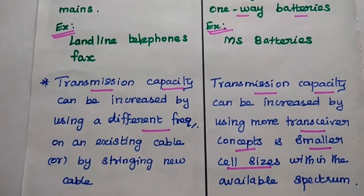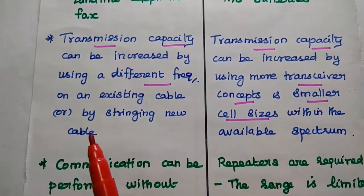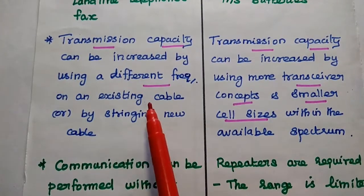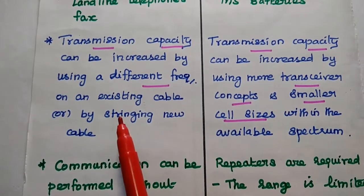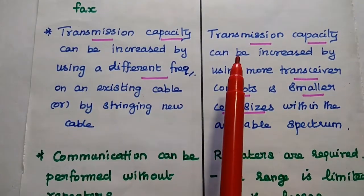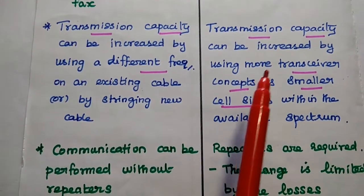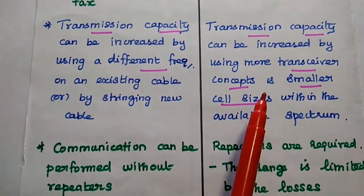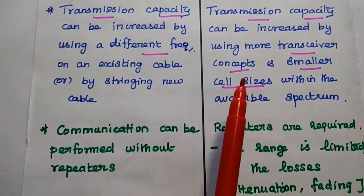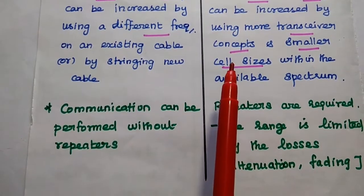The transmission capacity of wired communication can be increased by using a different frequency on an existing cable or by stringing new cable. For wireless communication, we can increase the transmission capacity by using more transceiver concepts and smaller cell sizes within the available spectrum. If you reduce the cell size, we can increase the transmission capacity.